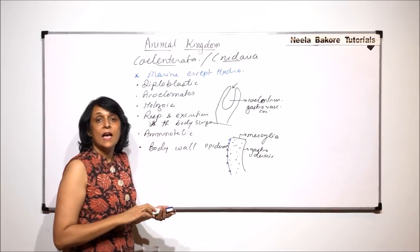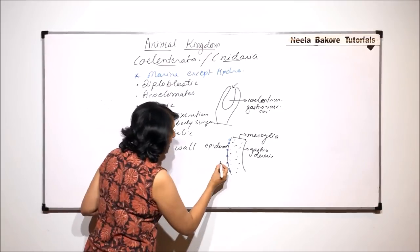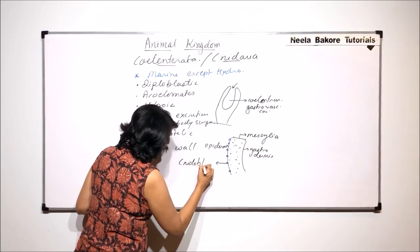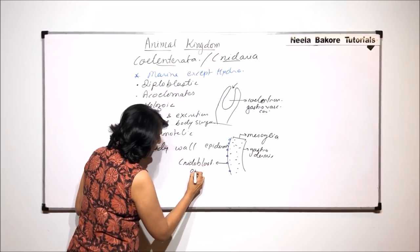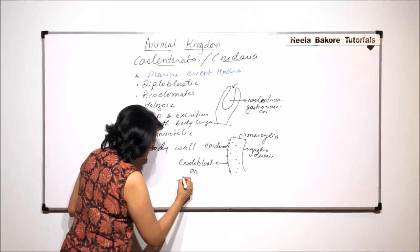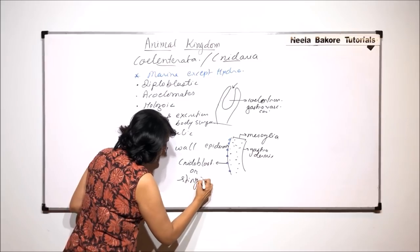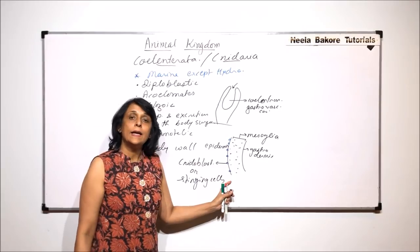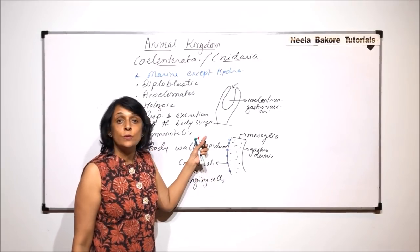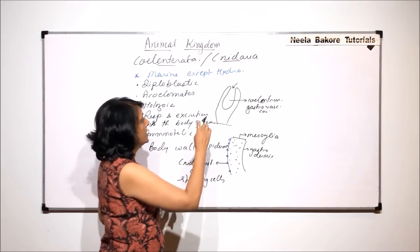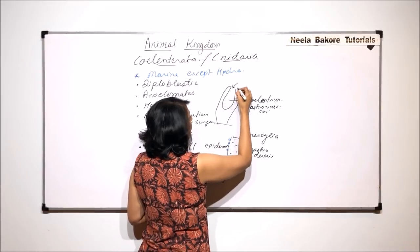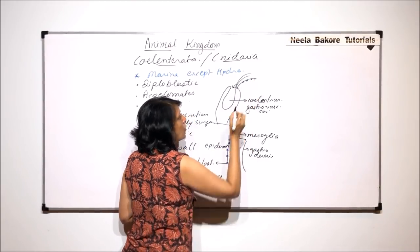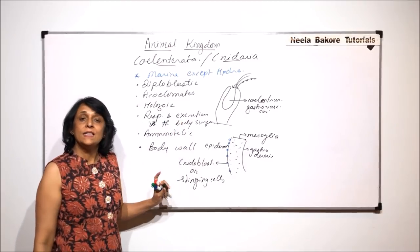Here there are these special cells and these cells are known as the cnidoblast. These are cnidoblast. They are commonly known as stinging cells. These cells are present on the outer layer, that is on epidermis, as well as on tentacles. For example, Hydra, here would be these tentacles and on these tentacles also there would be these cnidoblast.